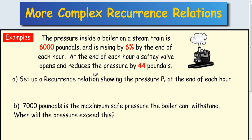Second example. The pressure inside the boiler on a steam train is 6000 pounds and is rising by 6% by the end of each hour. At the end of each hour the safety valve opens and reduces the pressure by 44 pounds.